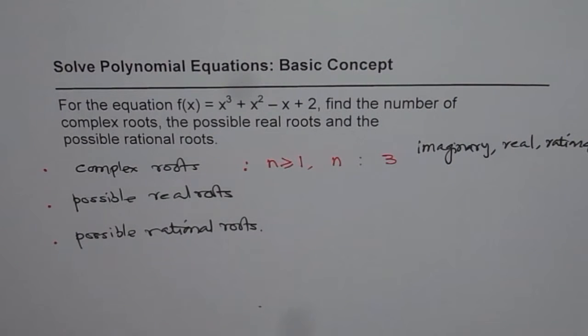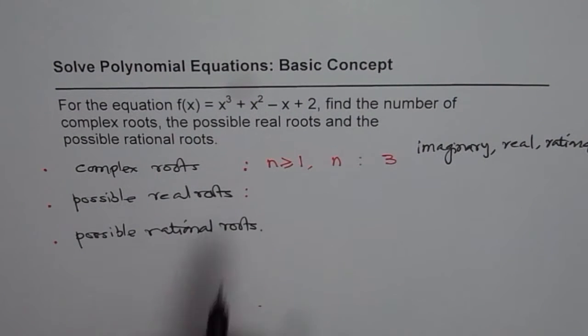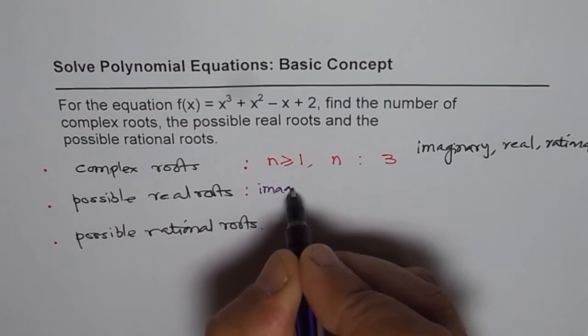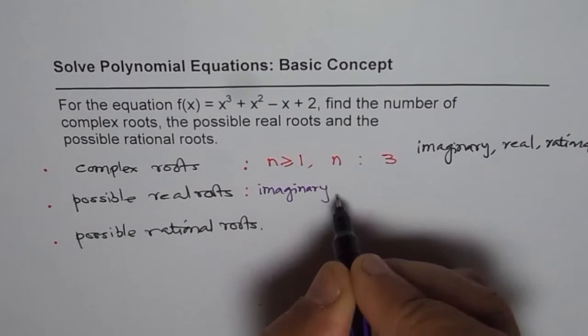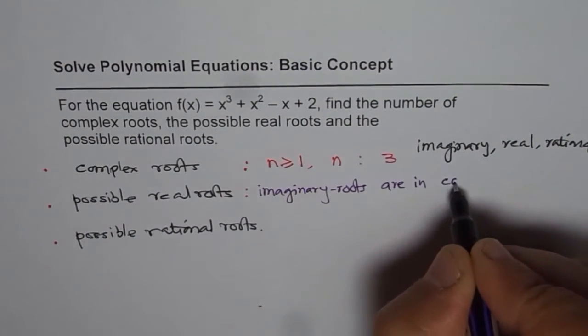Now, the second part of this is how many possible real roots. So as you know, imaginary roots are always in conjugate pairs. Now, important thing here to understand is imaginary roots are in conjugate pairs.